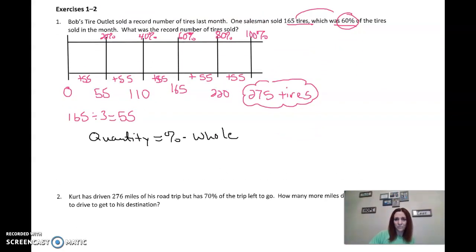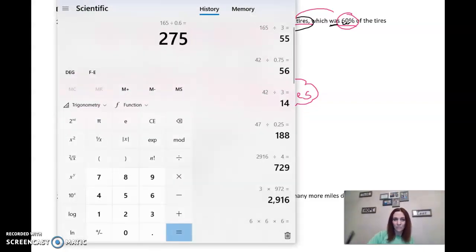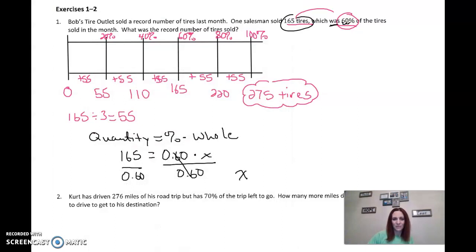All right. So let's try this with our formula. Percent, 60%. And change it to a decimal. Decimal points here. Two places left. Now, 165, which is 60%. Is that the total number of tires or the quantity, the part? It's the part. So then we solve like we always do. This is 1, or 0.60 times x. So I divide. And look at that. 275. Which is what we got up here with the visual. So we're doing the same thing.